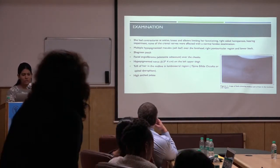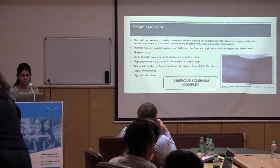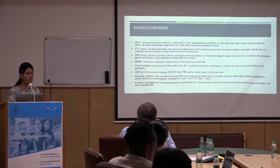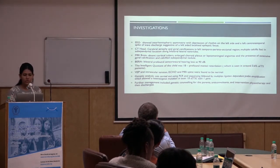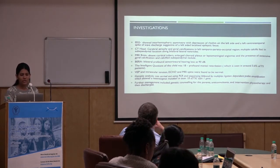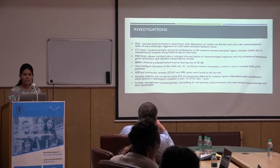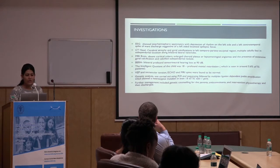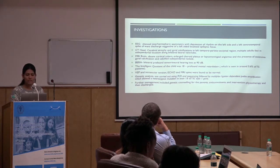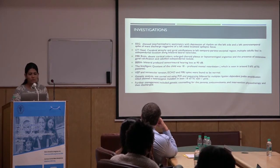Based on the clinical phenotype, the diagnosis was suspected to be tuberous sclerosis. On further investigating the child, the EEG showed inter-hemispheric asymmetry with depression of rhythm on the left side and left central-temporal spike and wave discharge, suggesting a left-sided localized epileptic focus. The CT head revealed cerebral atrophy and gyral calcifications in the left temporal-parieto-occipital region, and multiple calcific foci in sub-ependymal locations along bilateral ventricles. The MRI of the brain showed subcortical tubers, large choroid plexus, leptomeningeal angiomas, and extensive gyral calcification. Audiology recorded profound sensorineural hearing loss at 90 decibels. The IQ of the child was 18, suggesting profound mental retardation, which is seen in around 2.6% of tuberous sclerosis patients.